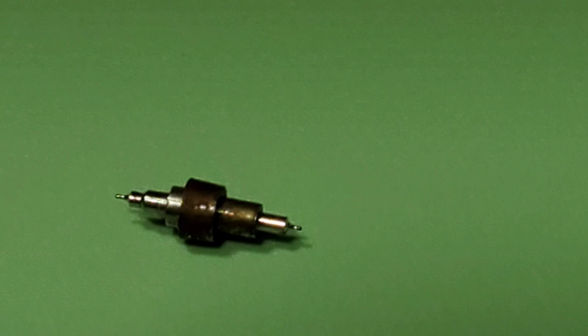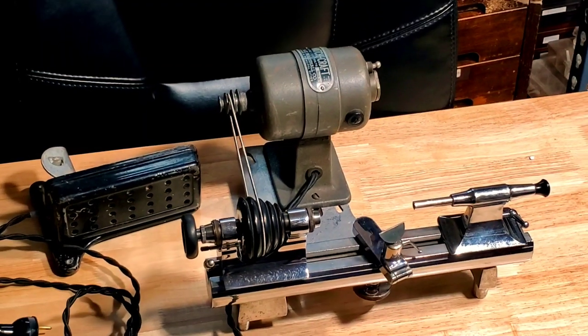What's going on and welcome back. Please like, share and subscribe. Today we're working on bringing back a rusty Illinois balance staff - the 1506/47607 for a model 15 Bunn Special 16 size pocket watch.